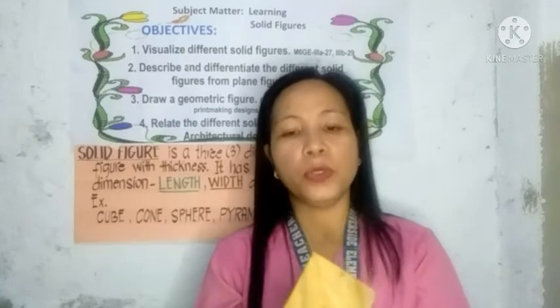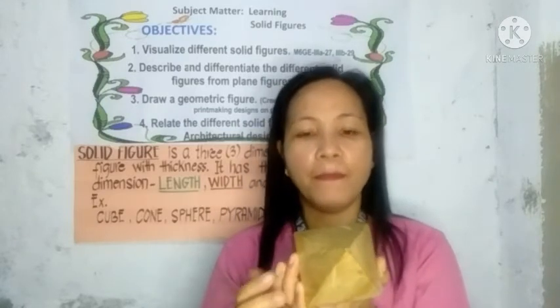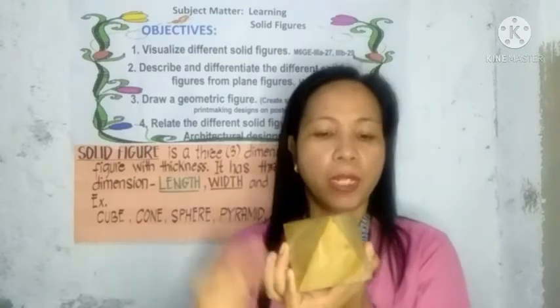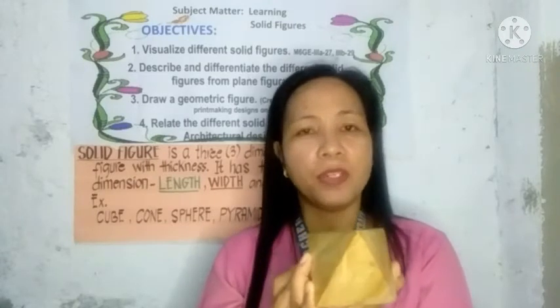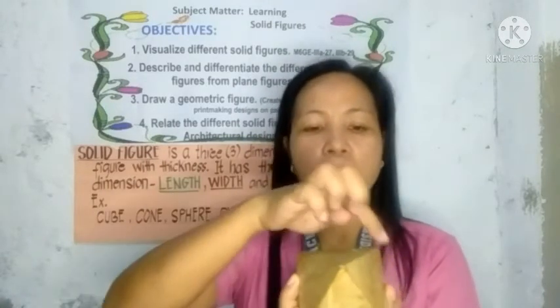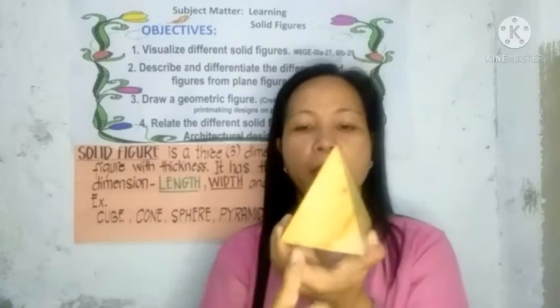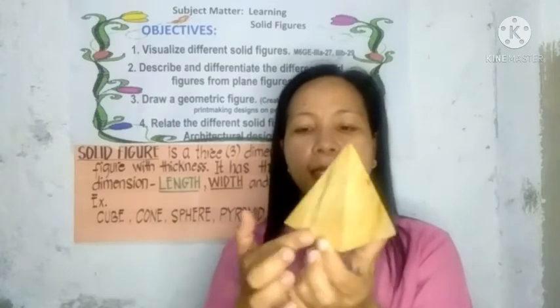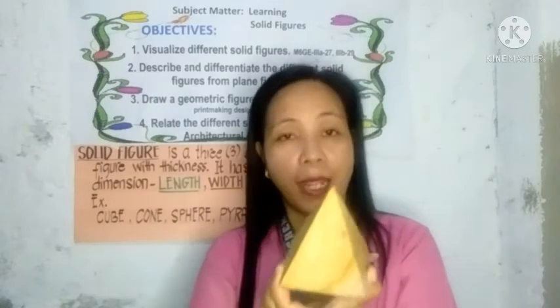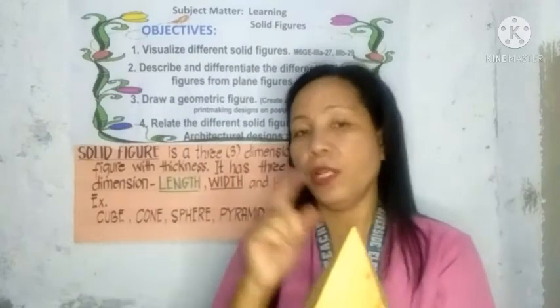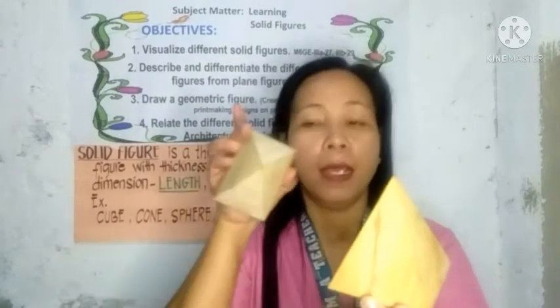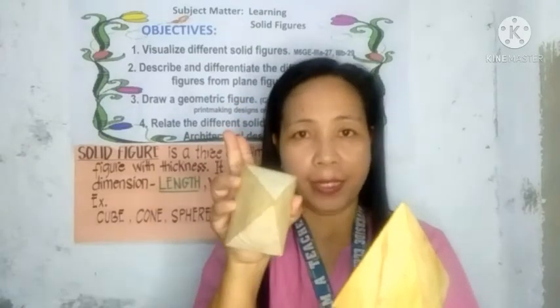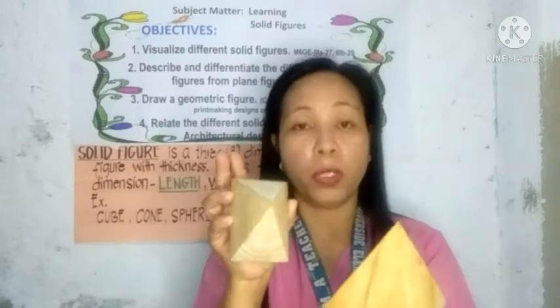Let's find the vertices of the square pyramid. There are five vertices. What about the edges? There are eight edges in a square pyramid — the same as the rectangular pyramid. The only difference is that in a square pyramid, all sides are congruent, while in a rectangular pyramid, only two pairs of sides are congruent.